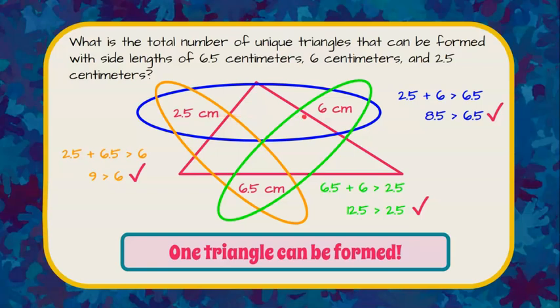But if you're given three specific side lengths you use the triangle inequality theorem to check that any two sides are greater than the third and then you have one unique triangle.